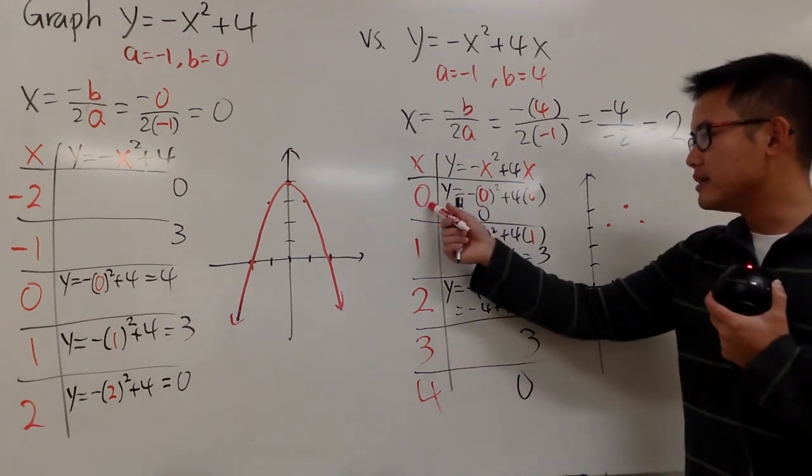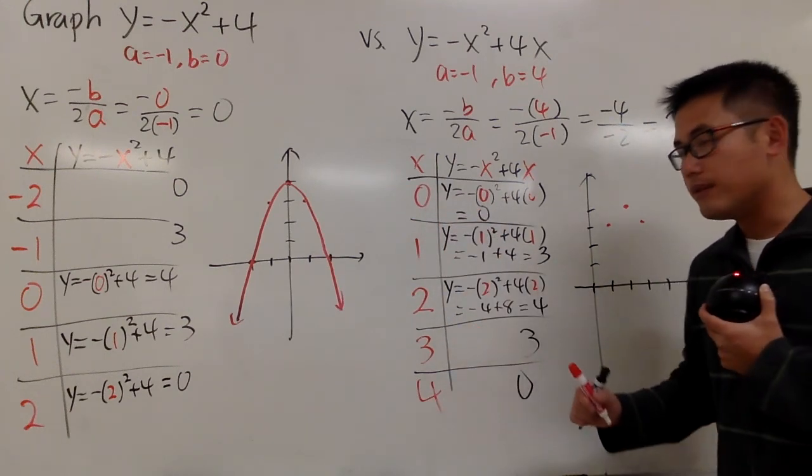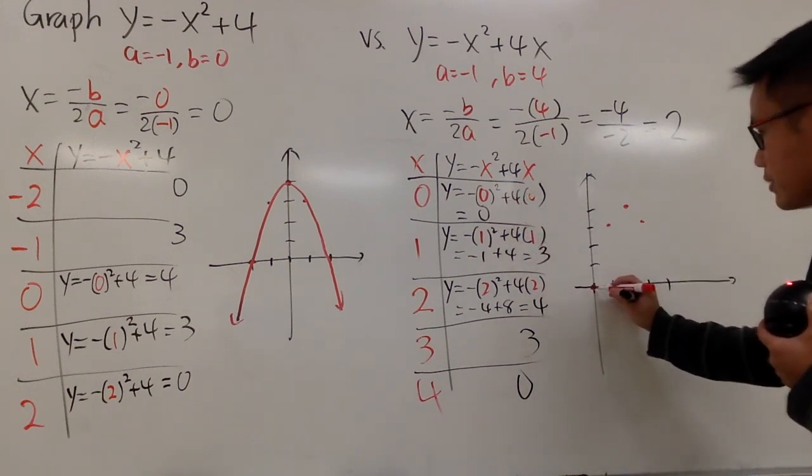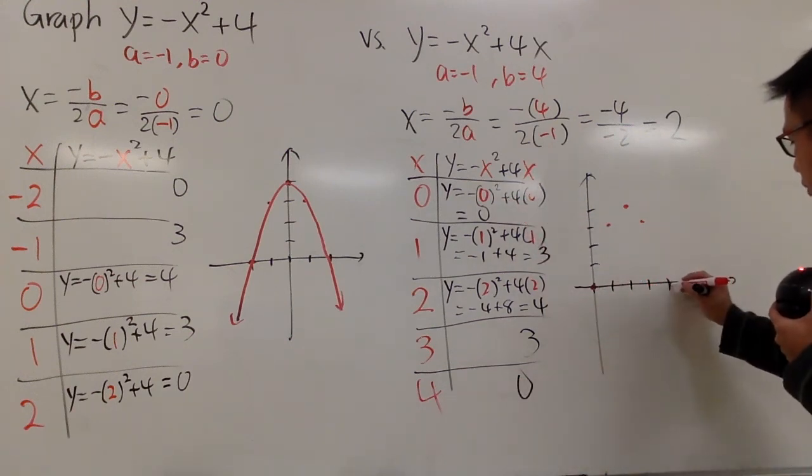And lastly, when x is equal to 0 and 4, the y values are both equal to 0. So we have 0, 0, 4, 0 right here.